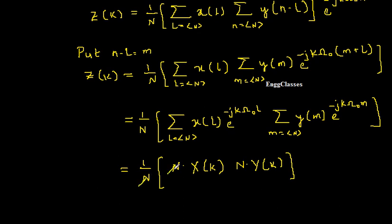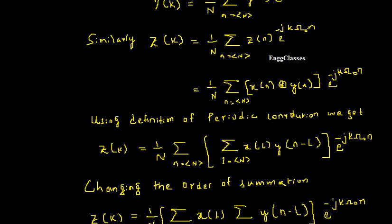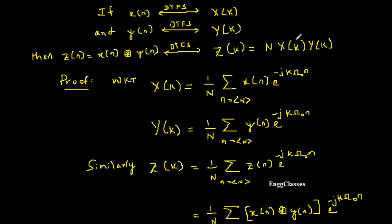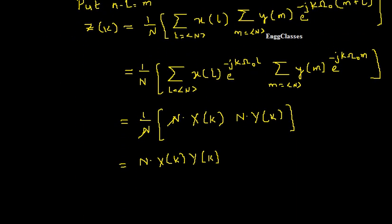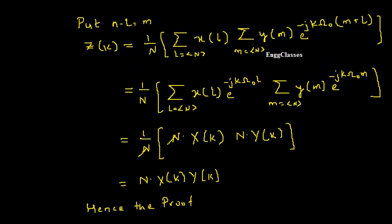The N's cancel out: (1/N) times N times N equals N. So we are left with Z of k equal to N times X of k times Y of k. This is exactly what we were looking for, hence the proof is complete. We proved that the convolution property of DTFS gives Z of k equal to N times X of k times Y of k.